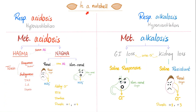Let me summarize the whole shebang for you in one minute. You have four diseases: respiratory acidosis, respiratory alkalosis, metabolic acidosis, and metabolic alkalosis. Respiratory acidosis is easy — just hypoventilation. Respiratory alkalosis — it's hyperventilation. Metabolic acidosis has two groups: HAGMA and NAGMA.